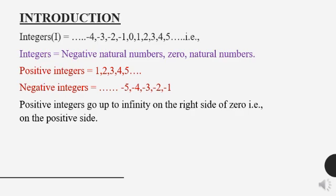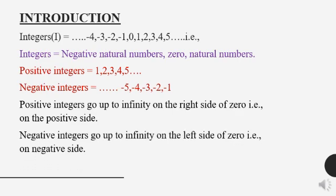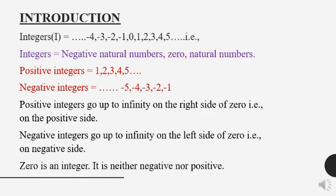Positive integers go up to infinity on the right side of 0, that is on the positive side. Negative integers go up to infinity on the left side of 0, that is on the negative side. Zero is an integer. It is neither negative nor positive.